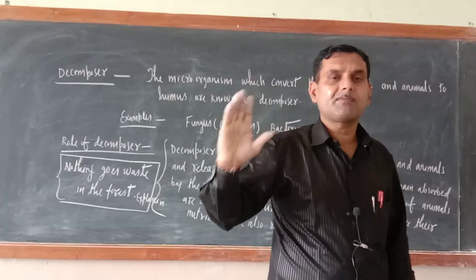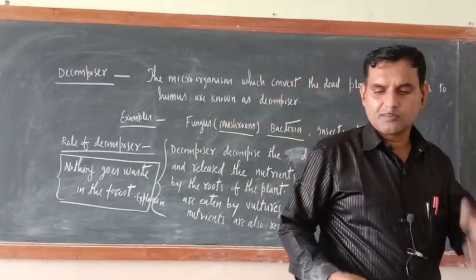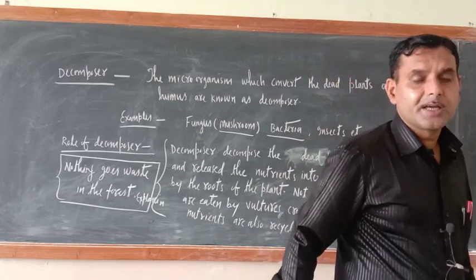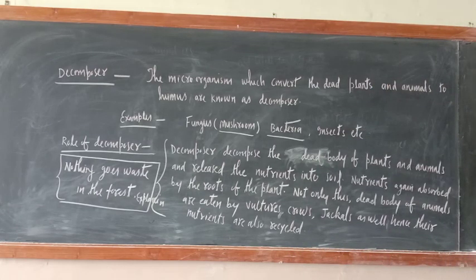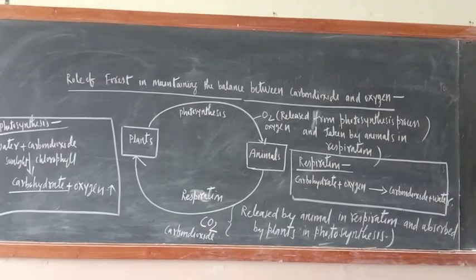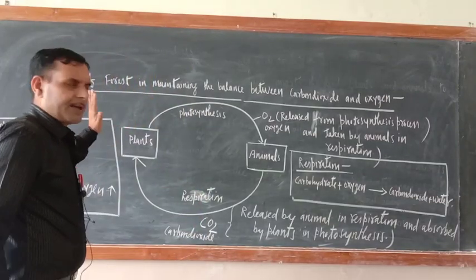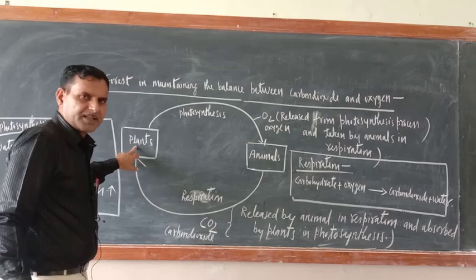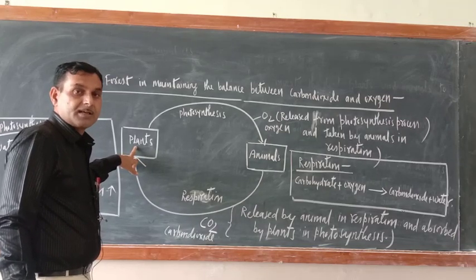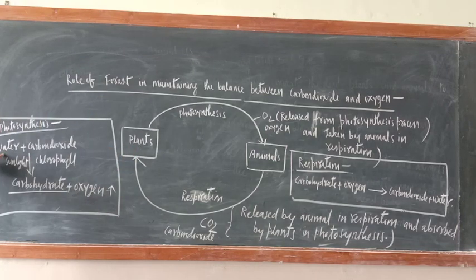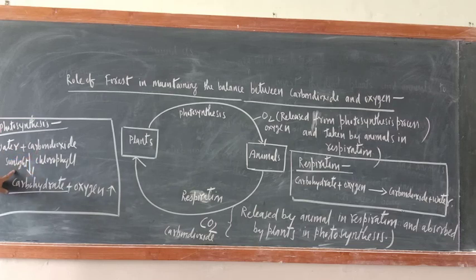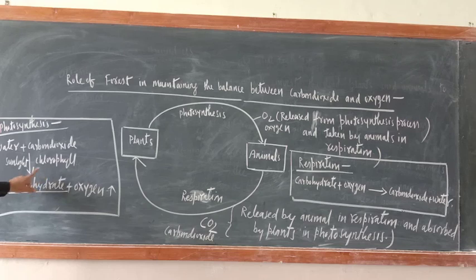There is one more question: how is the forest responsible for maintaining the balance of oxygen and carbon dioxide? Both gases are very important for us. Plants carry out the process of photosynthesis with the help of their green leaves. They absorb water through roots and carbon dioxide through stomata, converting water and carbon dioxide into carbohydrates — that is, food — and releasing oxygen gas. This happens in the chlorophyll of the leaves in the presence of sunlight.